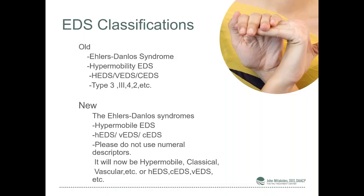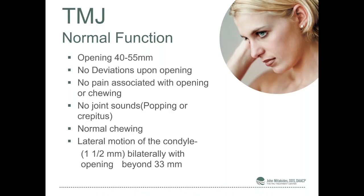Let's talk about TMJ. The TMJ is the joint that actually articulates your jaw to your skull right in front of your ear. When you open your mouth, that jaw actually hinges and slides — it is a dual motion joint. Under normal function, when you open your mouth, you should be able to open it 40 to 55 millimeters. There should be no deviations — when you look in the mirror, your jaw should not go from side to side. You shouldn't have any pain when you open your mouth, and you shouldn't have any popping or cracking in the joint.